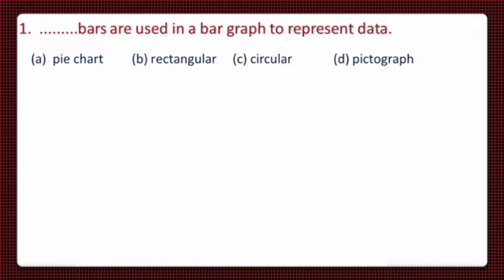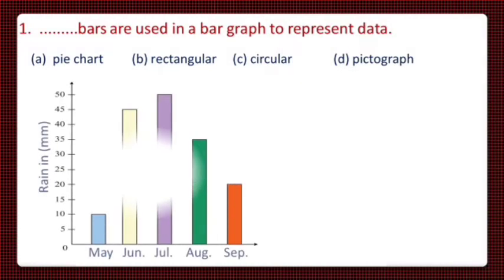Kids, you have already learnt about bar graphs. Here is a bar graph. This is an example of a bar graph. It shows the amount of rainfall received in different months. The rainfall in millimeters is shown month-wise by using bars. And these colored bars show the different amount of rainfall in the different months.